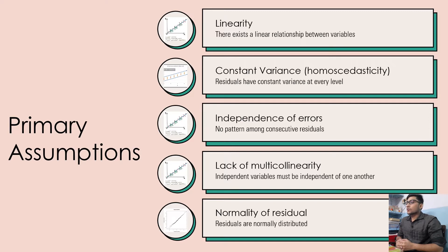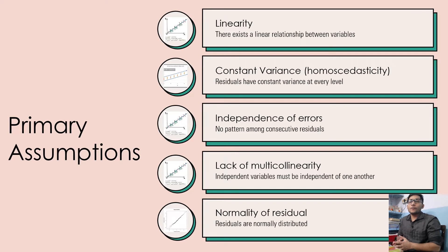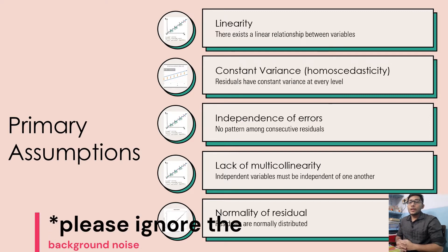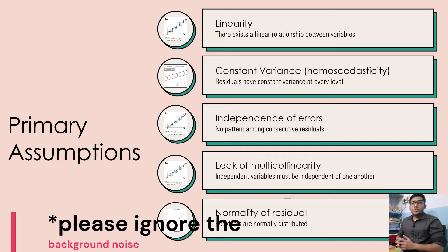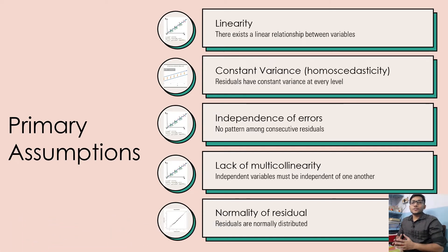The last assumption is normality of residuals. The residuals or errors associated with the linear regression model should be normally distributed. These are the five primary assumptions based on which a linear regression model gives us sufficient and reliable results. If any of these assumptions fail, the reliability of the model goes down and we cannot confidently say the p-values associated with the predictions are good enough.